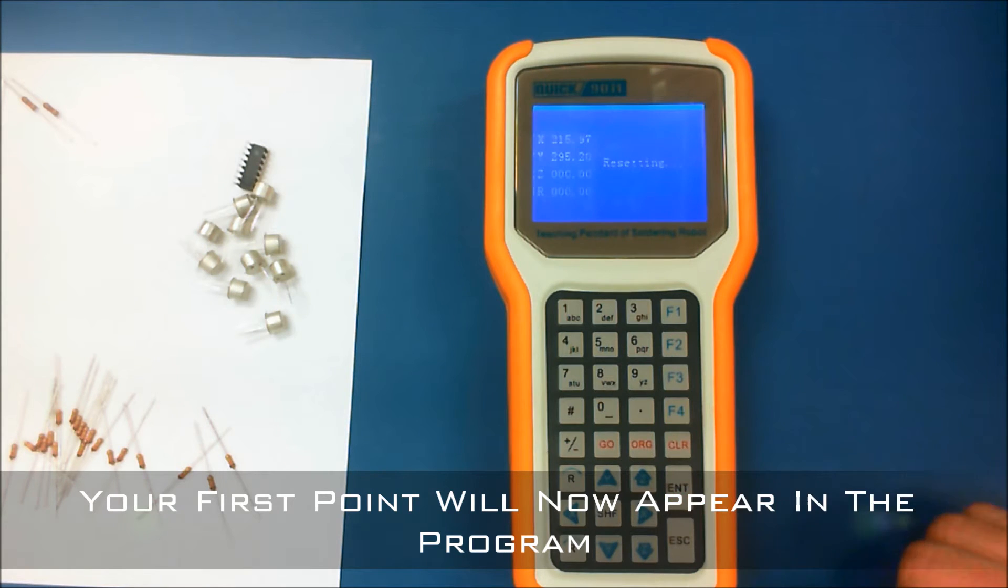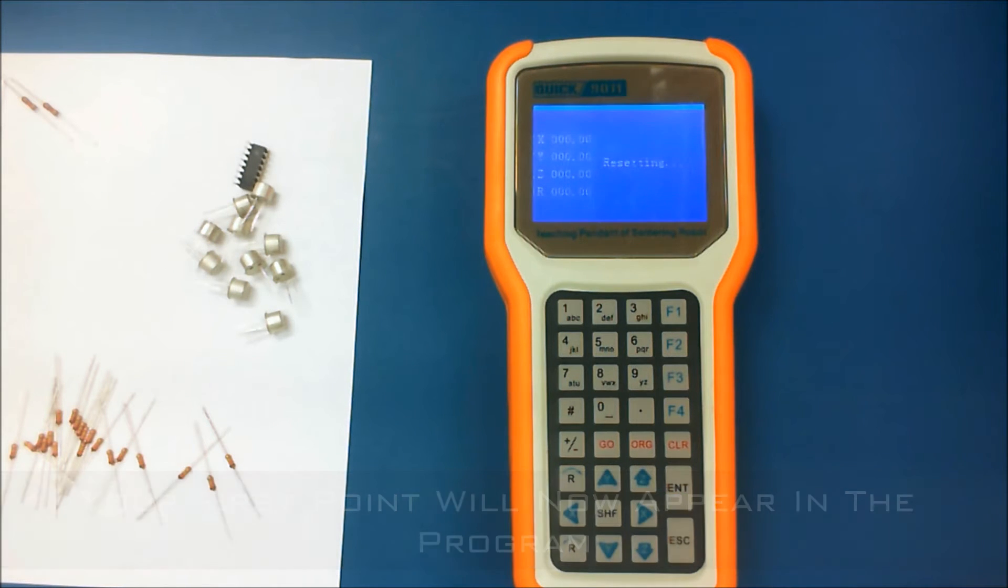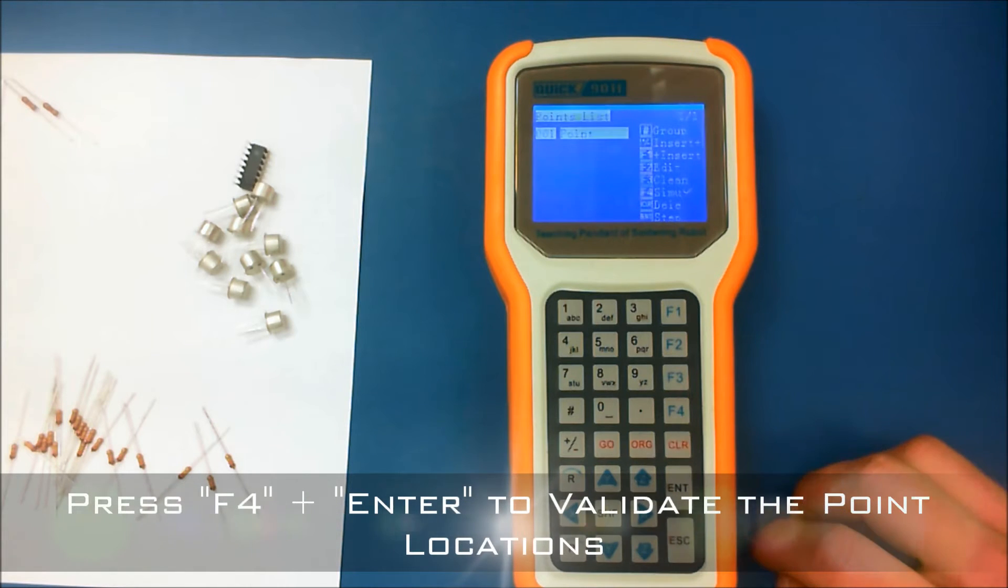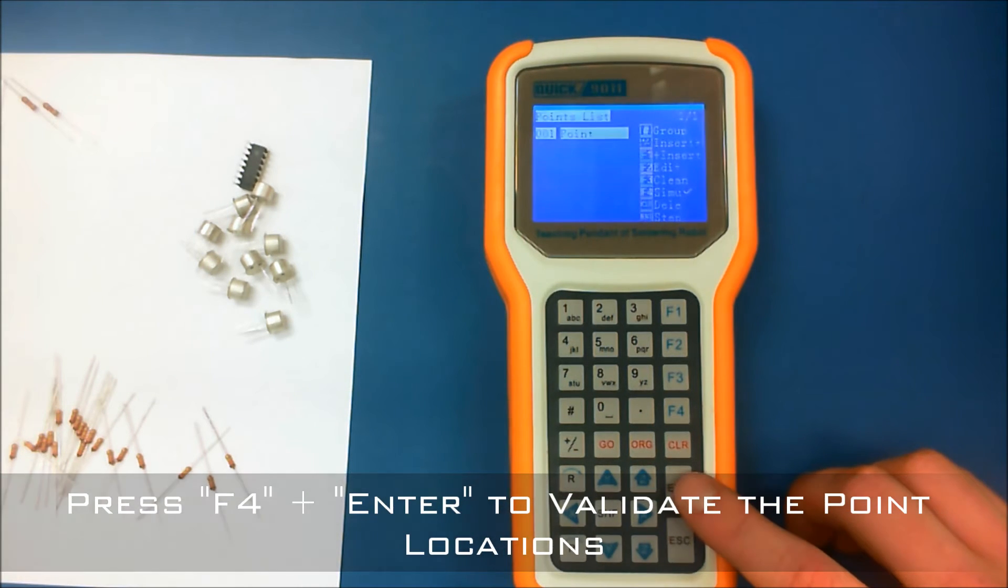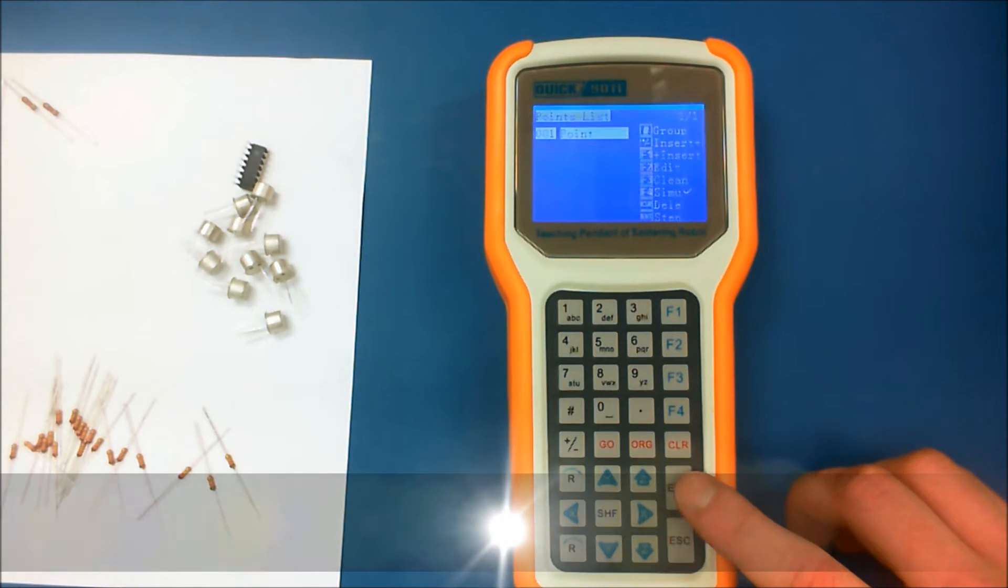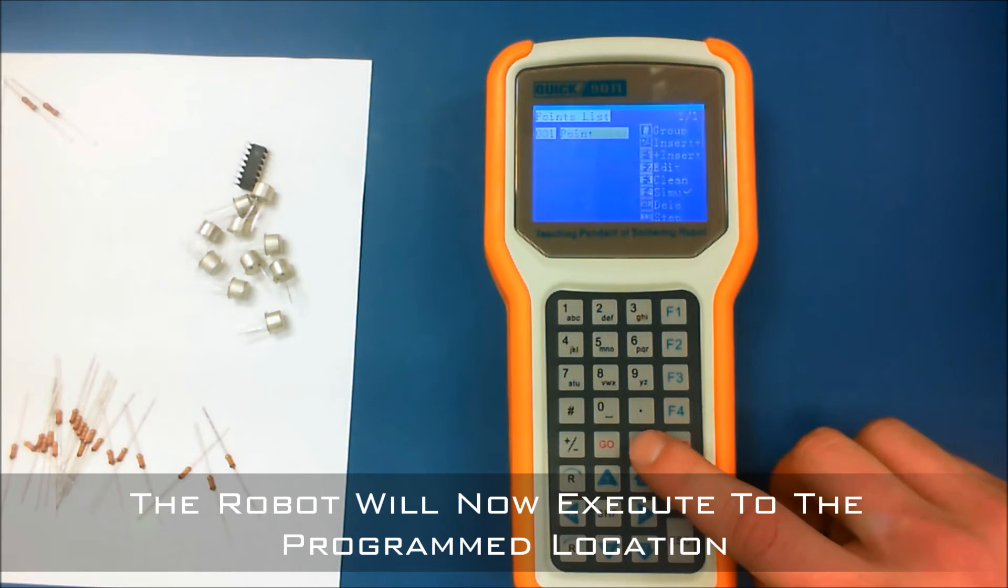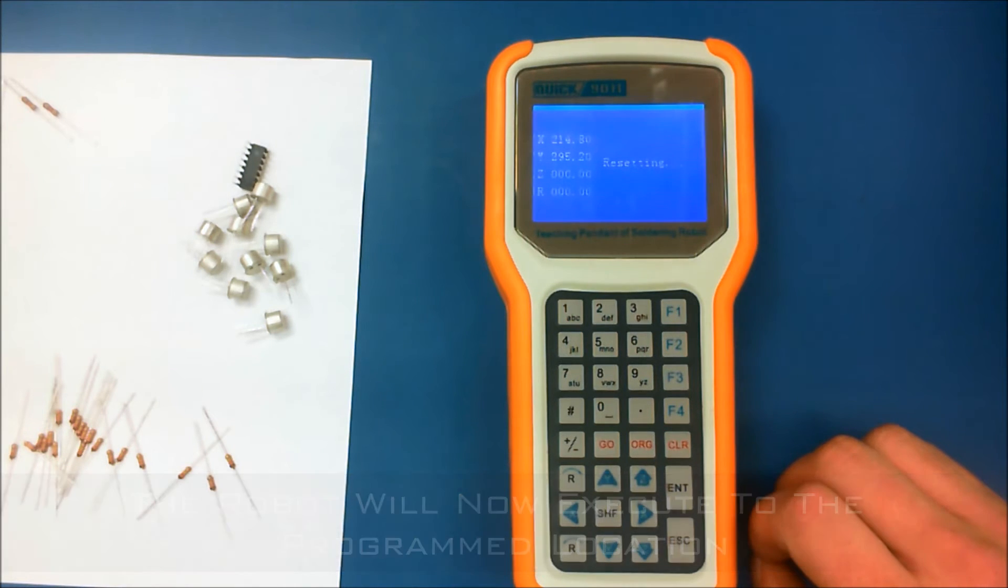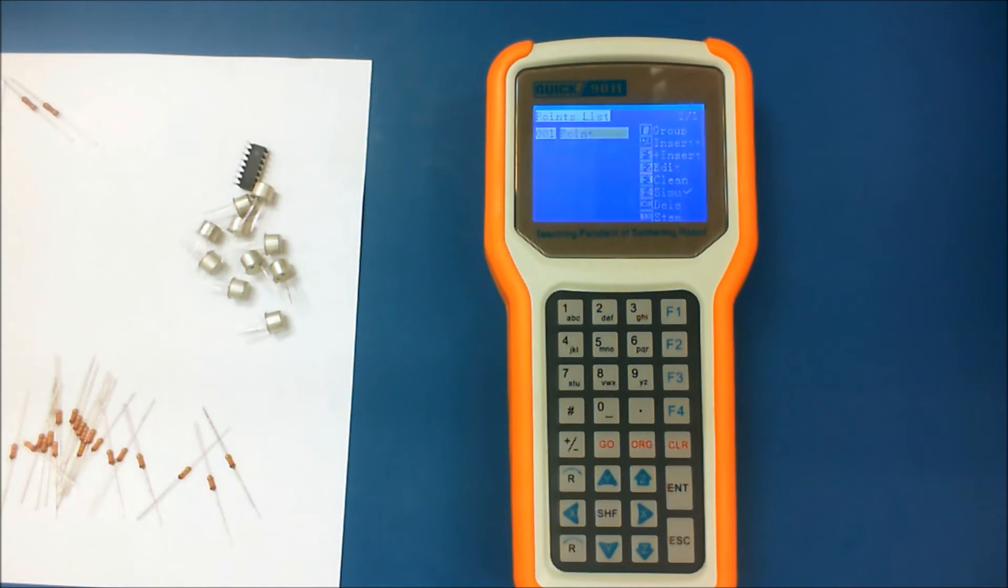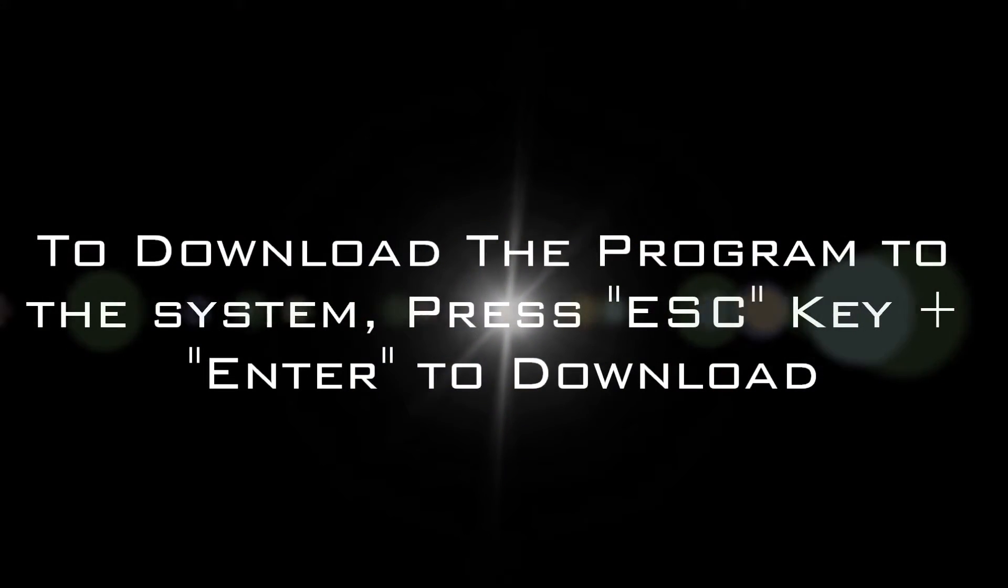I've simply pressed the ORG button or the origin button to run the origin to home. Now if you'd like to simulation run you can go ahead and press the F4 button. That will allow a check mark so to speak to be implemented next to the sim. And to actuate the simulation program we'll go ahead and press enter. Make sure that the robot is clear of any foreign materials and the robot will in fact run to that location.